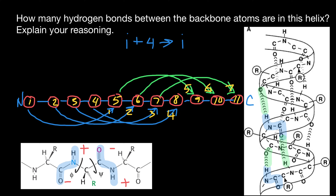Out of these 11 amino acids, amino acids number five, six, and seven have double hydrogen bonding — bonding with amino acids both downstream and upstream. Those representing the N and C terminus have only a single hydrogen bond. We do not count these bonds twice.